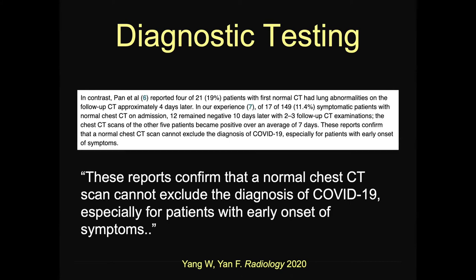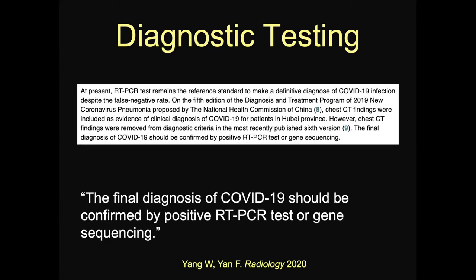Mostly in the United States, we're not using chest CT. In China, they did many CT scans in patients early throughout their hospital stay and at discharge, whereas we're using it very sparingly at most institutions, if at all, and we're not doing serial imaging in the majority of our patients. Most importantly, the final diagnosis of COVID-19 should be confirmed by a positive RT-PCR test or gene sequencing. Keep that in mind when interpreting these results and consulting with somebody about the results of an imaging test.